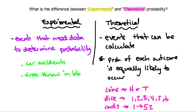The key thing with experimental probability is that more data leads to better results. It's worth noting that we can also run experiments on theoretical events — like tossing a coin a hundred times to see if the data matches the theoretical values. However, experimental probabilities really can't be done theoretically; we need the data to figure them out. One thing we'll explore in class is how to explain differences between experimental and theoretical probabilities when those differences do exist.